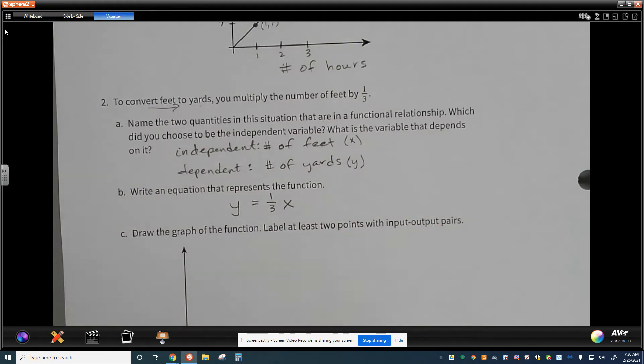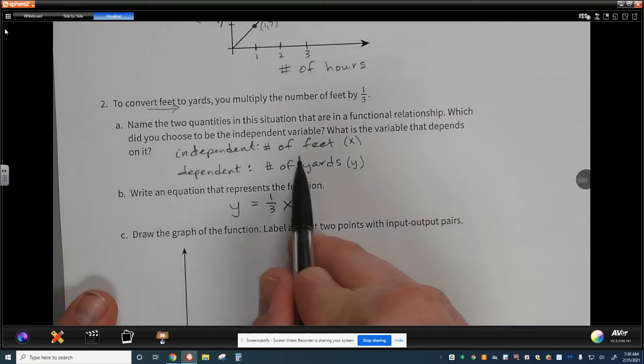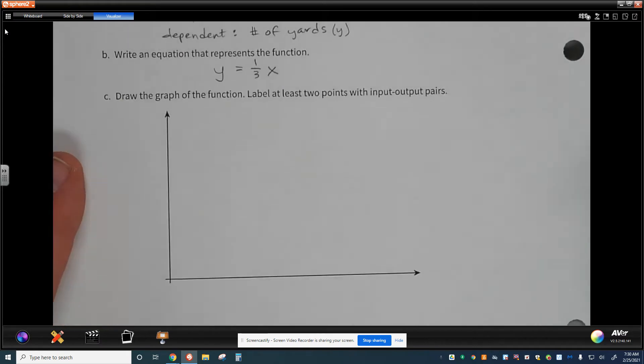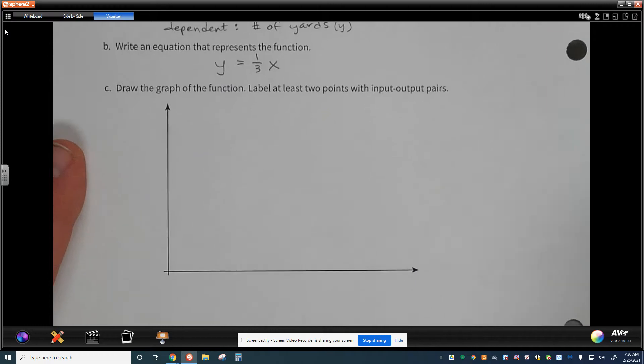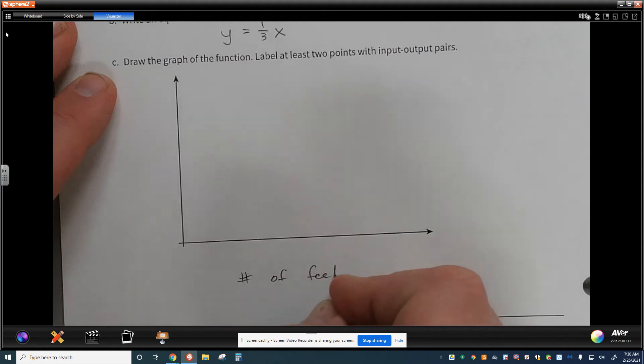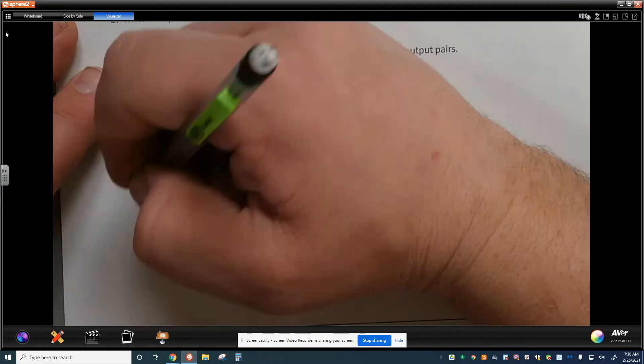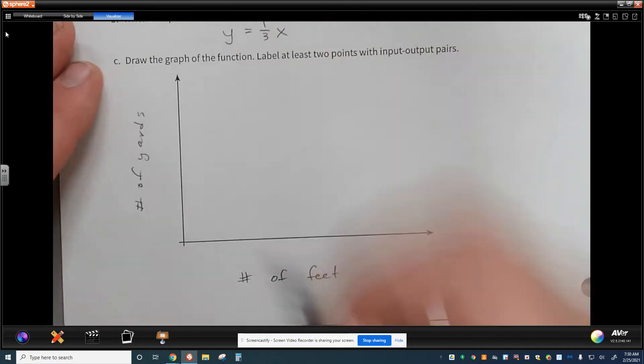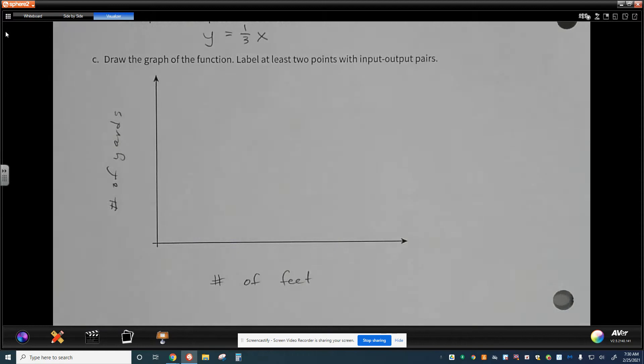And so we take our equation and we say the number of yards is dependent on one-third the number of feet. And you'll notice, again, I didn't say any of the actual letters that go with this, the letters of the variables. I'm talking about the values that are given. So when we draw a graph of the function and label these two points, what we need to remember here is that the number of feet is given for x and the number of yards is given for y. And this is where some background knowledge will also help us.